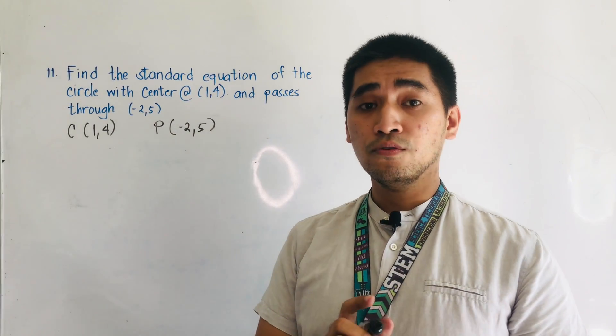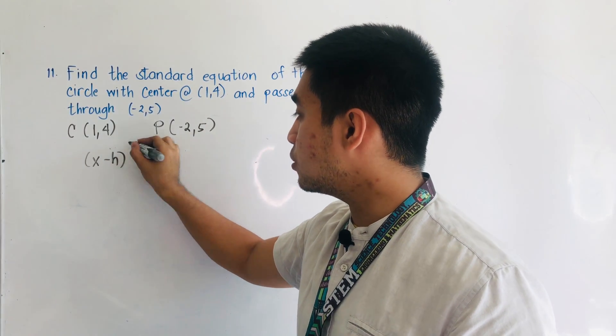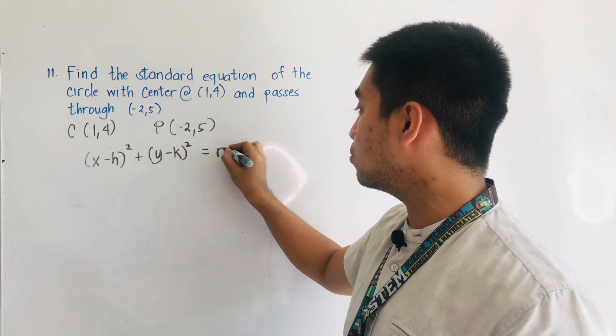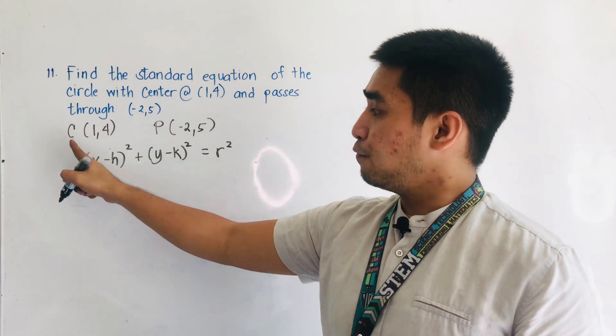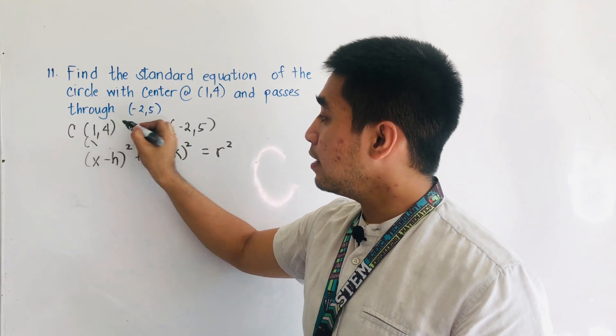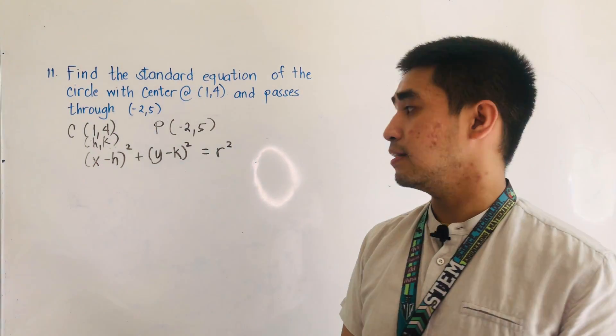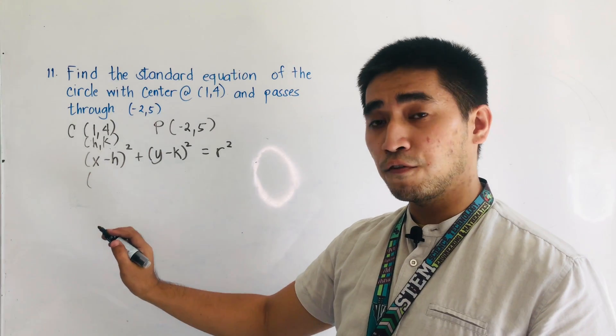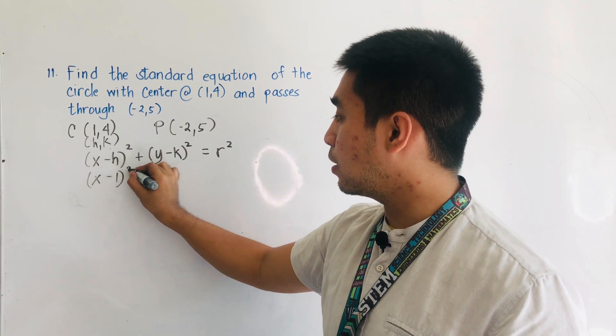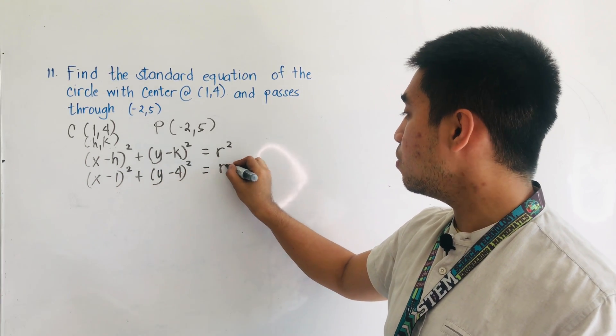So, all we have to do is to write the center radius form of the circle, and the center radius is x minus h quantity squared plus y minus k quantity squared is equal to r squared. If we are given the center, always remember that those coordinates are h and k. So rewriting this in the formula, we will be having x minus 1 quantity squared plus y minus 4 quantity squared is equal to r squared.